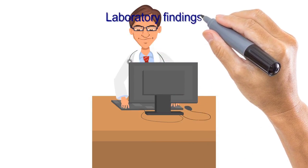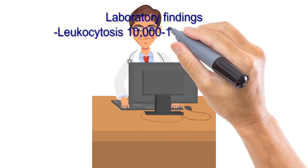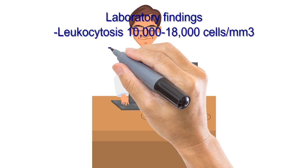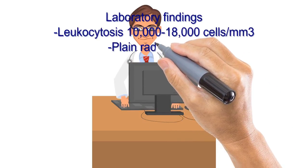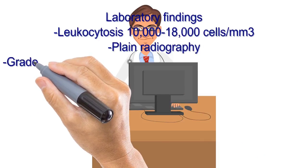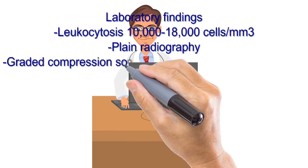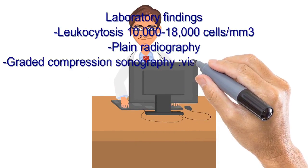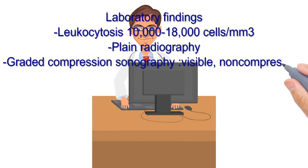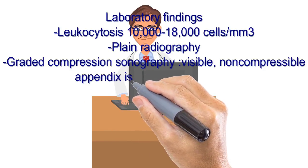Laboratory findings: leukocytosis, ranging from 10,000 to 18,000, is usually present in patients with acute appendicitis and is often accompanied by a moderate polymorphonuclear predominance. Plain films of the abdomen, although frequently obtained as part of the general evaluation, rarely are helpful in diagnosing acute appendicitis. However, plain radiography can be of significant benefit in ruling out other pathology.